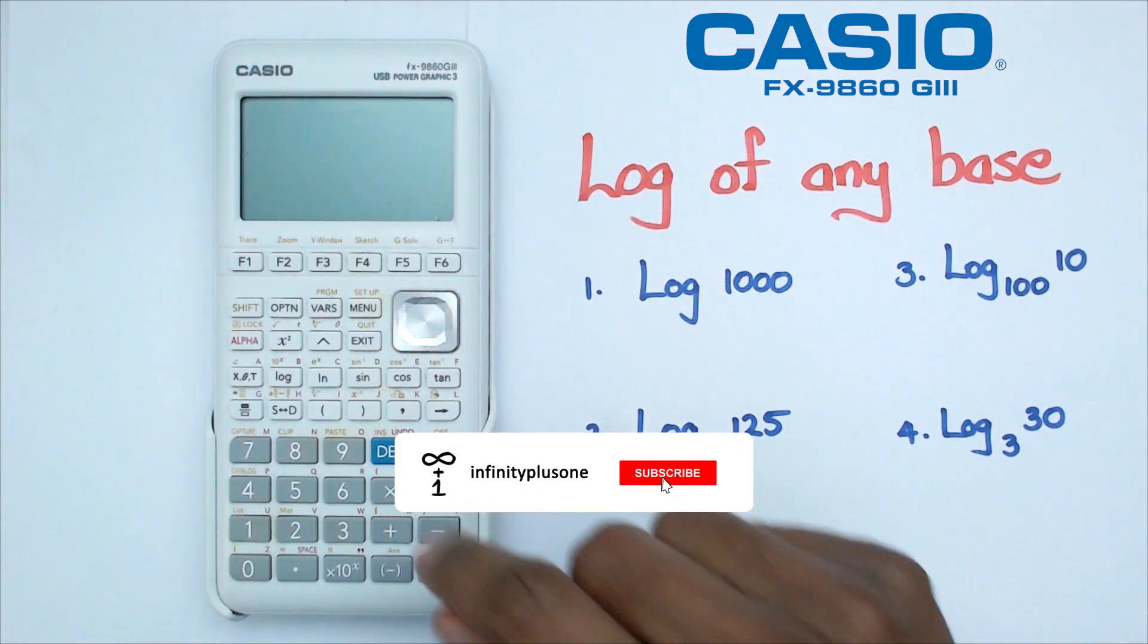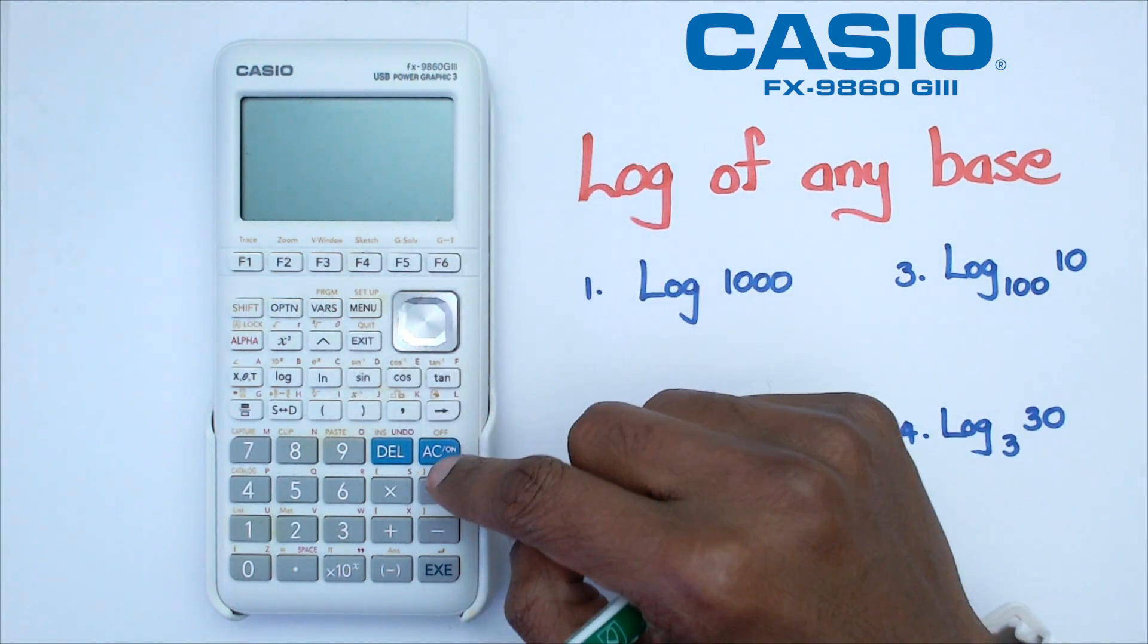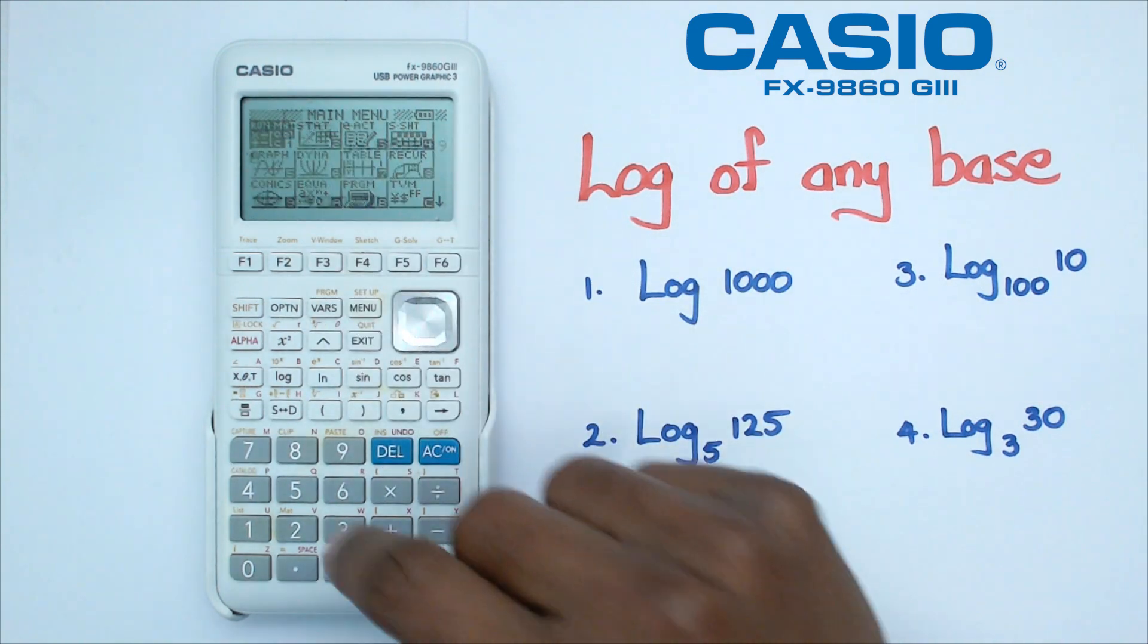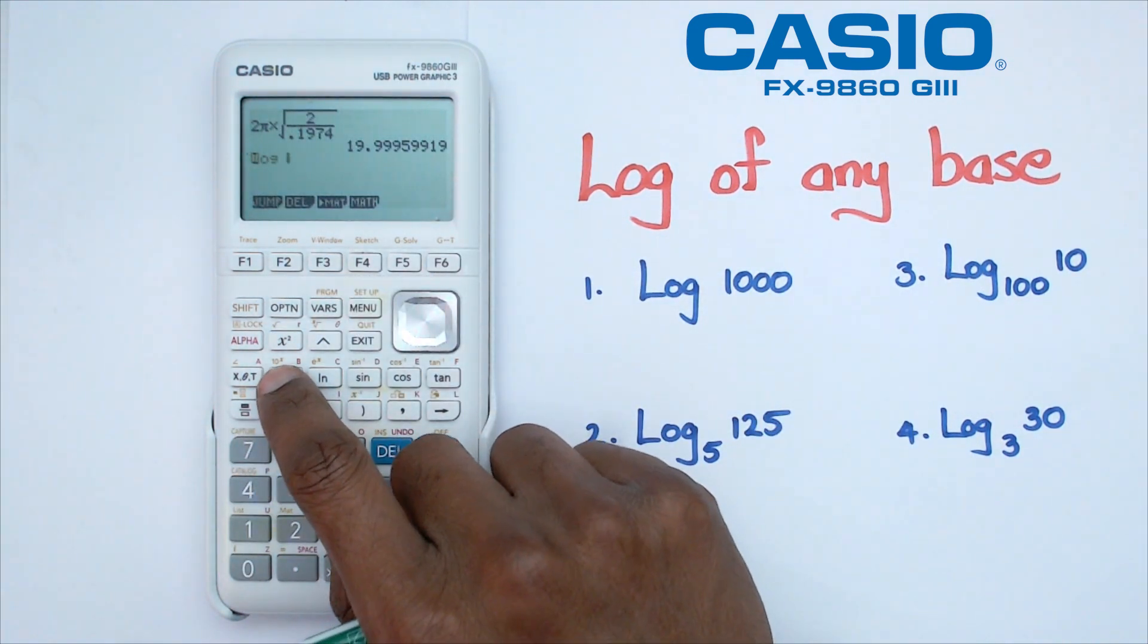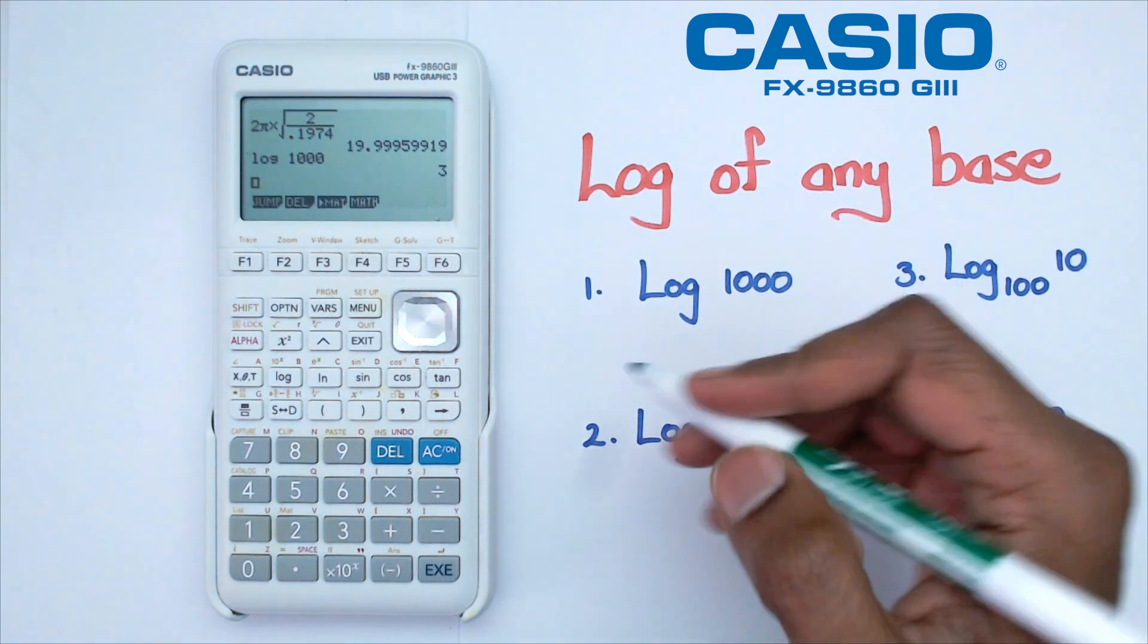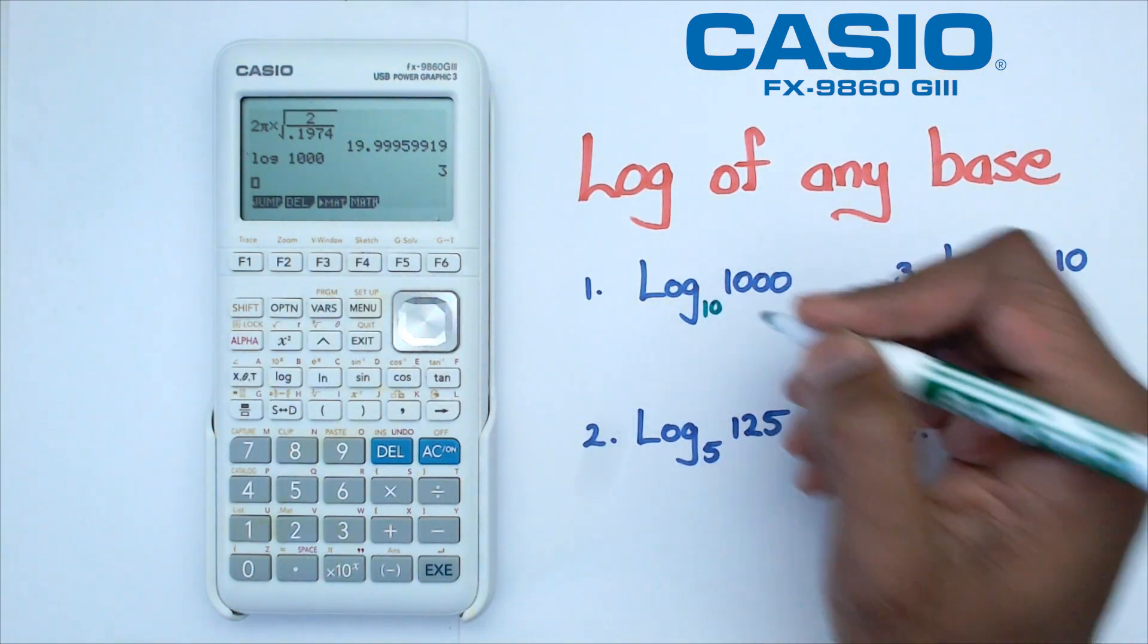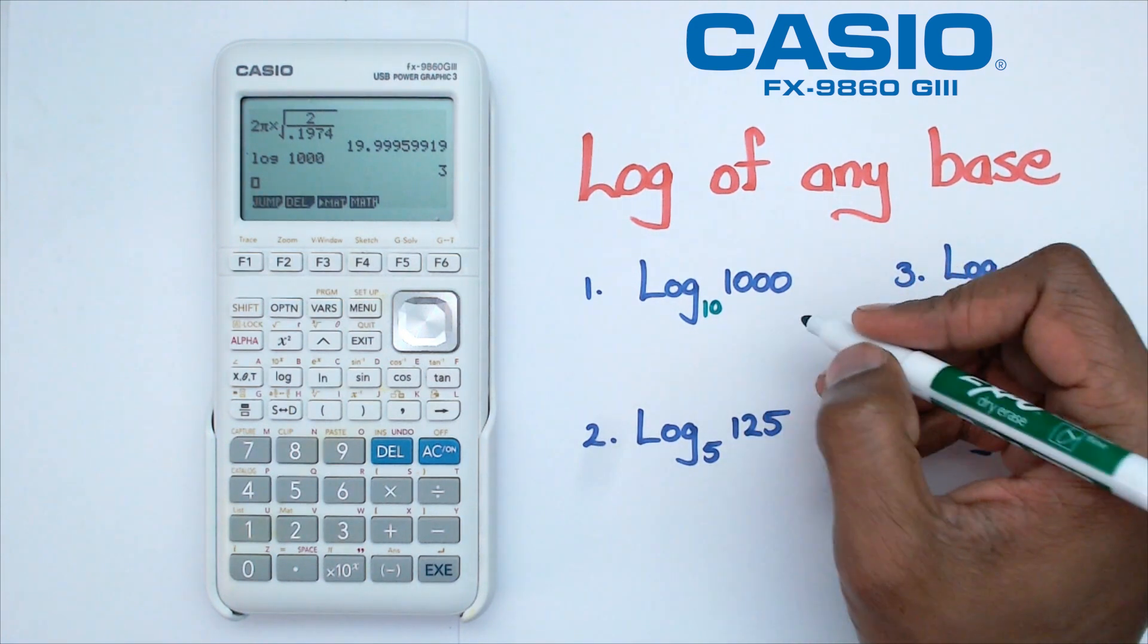All right, so the first question we're going to be looking at is how to find log of 1000. The way we're going to do this is switch on the calculator, go into main menu, go into the run menu. When you click on log and press in log 1000, you're going to get three as the answer. That's because anytime you press this particular log, it takes it to the base of 10. So in this case, we get an answer of three.